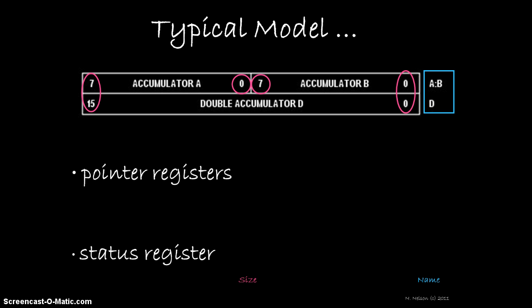Notice also the way the Programmer's Model shows these registers. They are attached. This means that they actually share the same physical space in the CPU. In other words, if we store something in register A, and then store something different in register D, the value from A would be overwritten and lost.